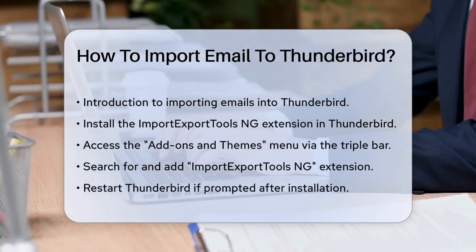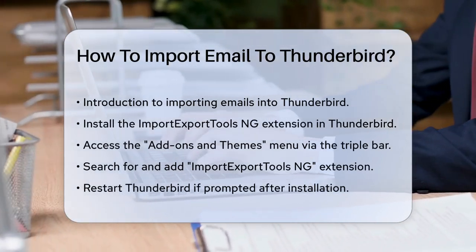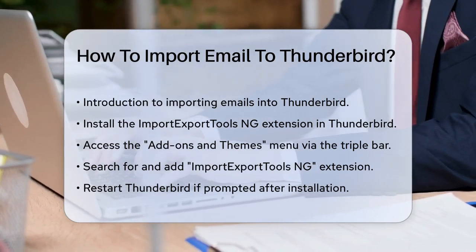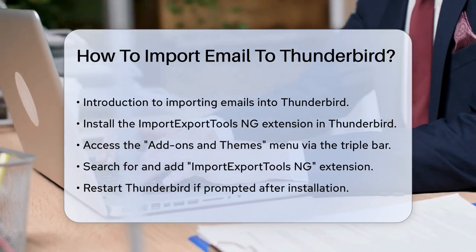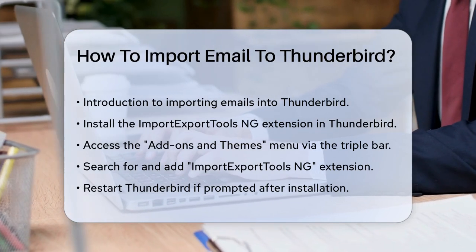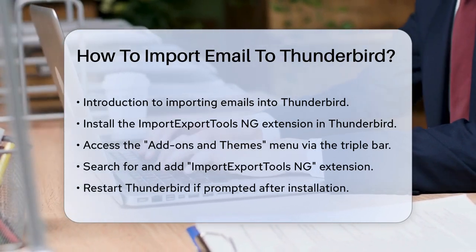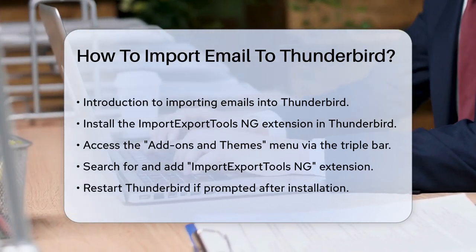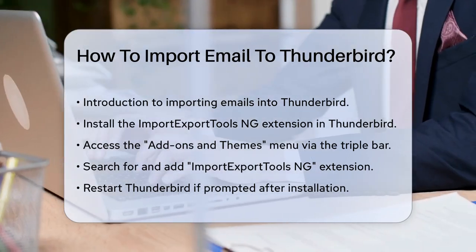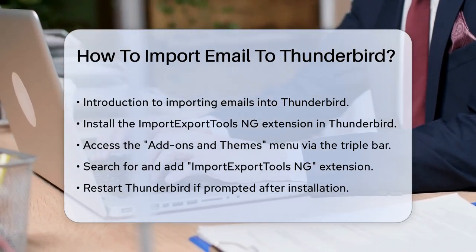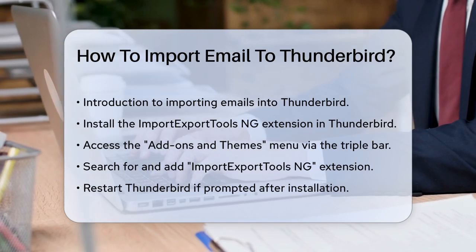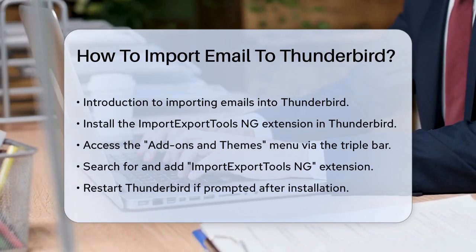First, you need to install a helpful extension called Import Export Tools NG. Open Thunderbird and click on the triple bar in the top right corner. Select Add-ons and Themes from the menu, then search for Import Export Tools NG in the search bar. Click on Add to Thunderbird and confirm the addition. You might need to restart Thunderbird after this.